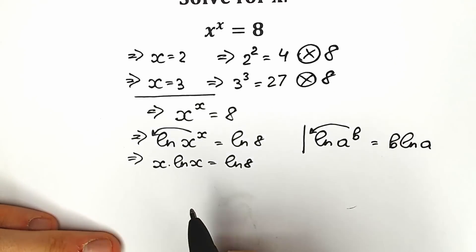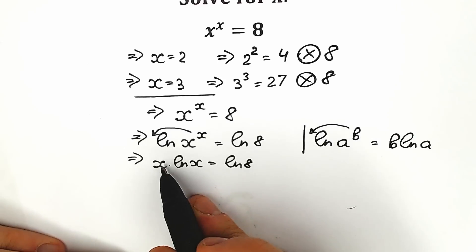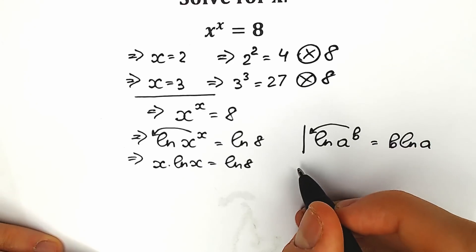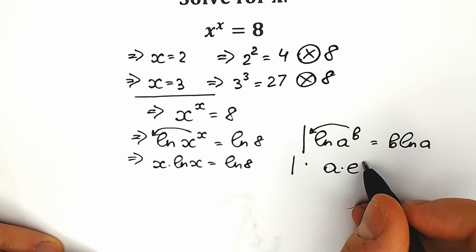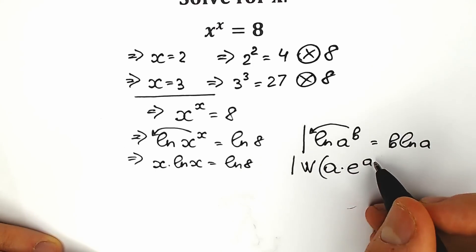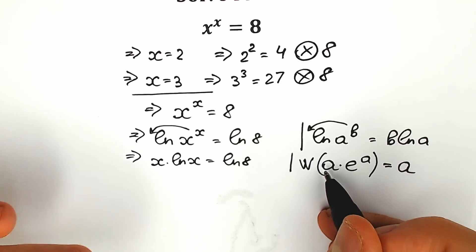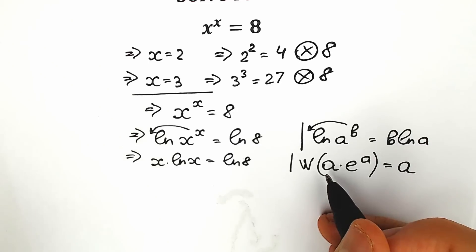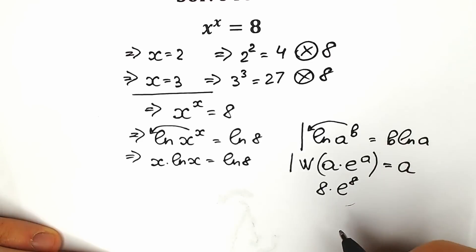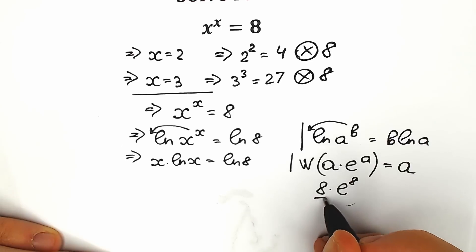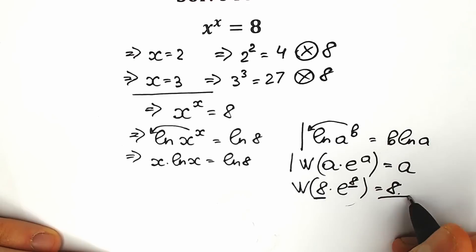Right now, let's try to group our variables on the left side and our constant on the right side — we already have that. The next really important step is the Lambert W function. This function works like: if you have an expression like a times e to the power a, and you apply Lambert W to it, you get only a. It simplifies a lot. For example, 8 times e to the power 8 — apply Lambert W, and you get 8.